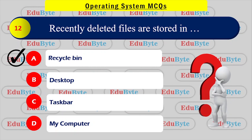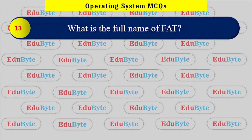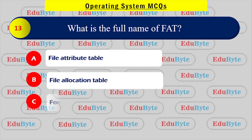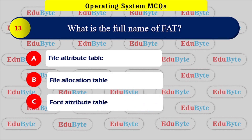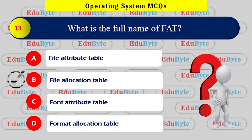What is the full form of FAT? Options: File Attribute Table, File Allocation Table, Font Attribute Table, Format Location Table. The correct answer is File Allocation Table.